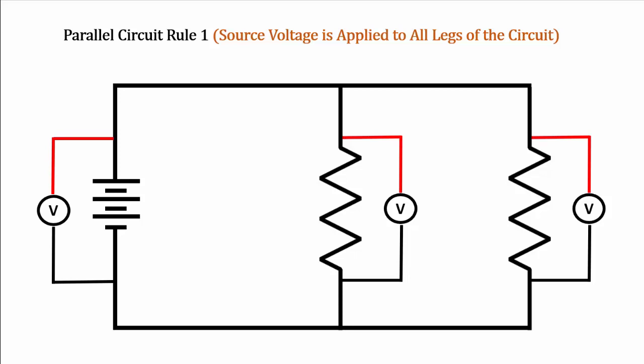When we use series, it's because we want the different loads to share the voltage or to get a lower voltage than the source voltage. So there are reasons why we would use either one. But for the most part, a car uses mostly parallel circuits or a combination called series parallel, which we'll learn in a more advanced course. So let's move on to rule number two.